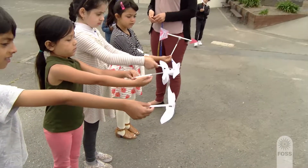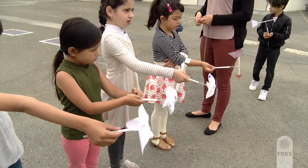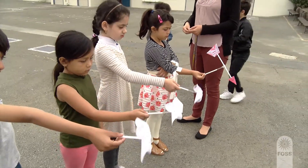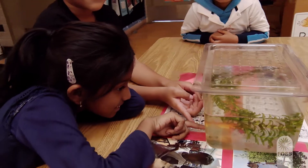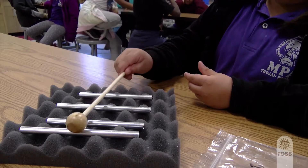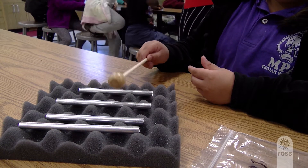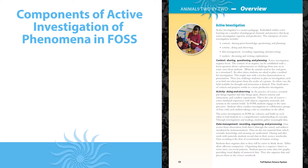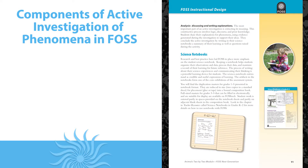FOSS Active Investigation is more than hands-on science. It is how science becomes accessible for all students. Students use science and engineering practices and cross-cutting concepts to construct explanations about real-world phenomena. These are the components of active investigation, although they don't always follow the same linear progression.